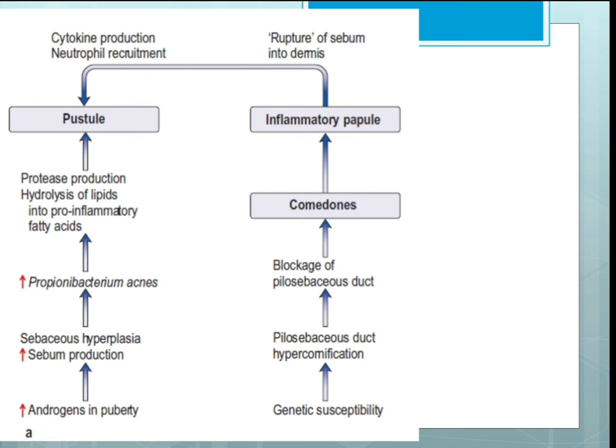Additionally, increased androgens combined with genetic susceptibility lead to pilosebaceous duct hyperkeratinization, causing blockage of the pilosebaceous duct and the formation of comedones. This then leads to inflammatory papules, and the interruption of sebum into the dermis triggers cytokine production and neutrophil recruitment, resulting in the formation of a pustule.